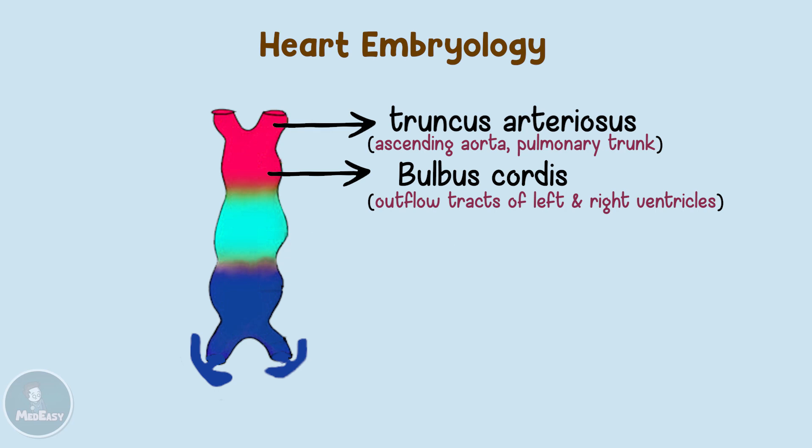This is easy to remember because the bulbus cordis is closest to the truncus arteriosus in the primitive heart, just like the aorta and pulmonary trunk are closest to the outflow tracts in the adult heart.